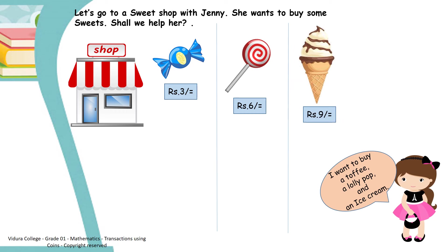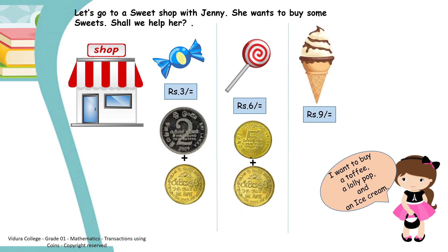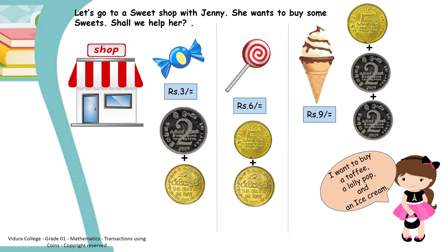Now we can see what coins she should need to buy these things. To buy a toffee, she should spend a 2 rupees coin and a 1 rupee coin. To buy a lollipop, she should spend a 5 rupees coin and a 1 rupee coin. To buy an ice cream, she should spend a 5 rupees coin and 2 coins of 2 rupees.